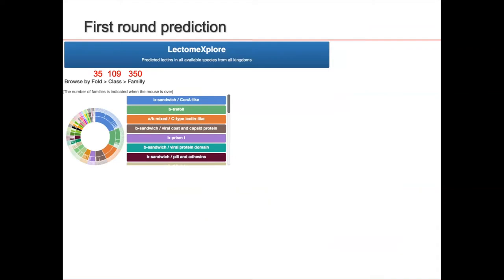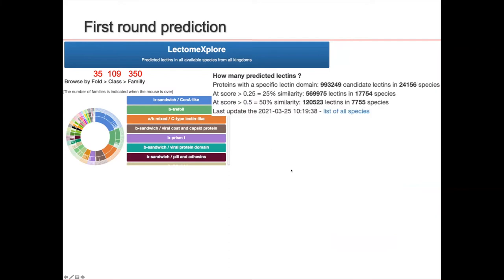The first round of prediction we did with the Grenoble team was Lectum Explorer. We have 35 folds, 109 classes, and 350 families. We actually processed any sequence under the sun that we could find in UniProt, at the NCBI, in proteome translated genomes and so on, and we ended up with half a million lectins in 17 plus 100,000 species. We are trying to make sense of this data, it's hard.